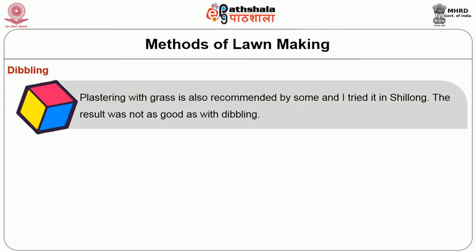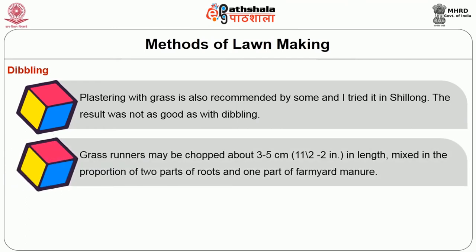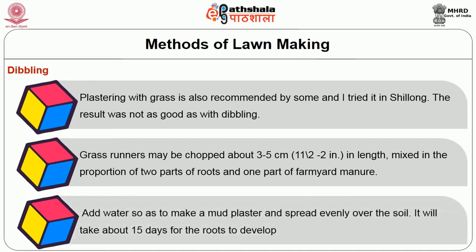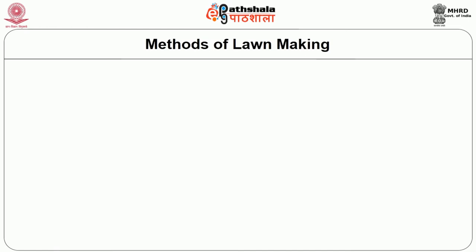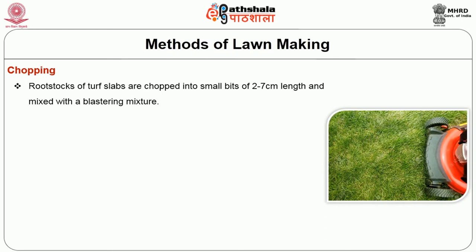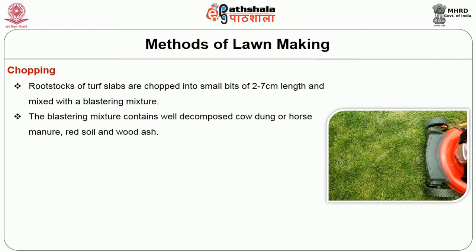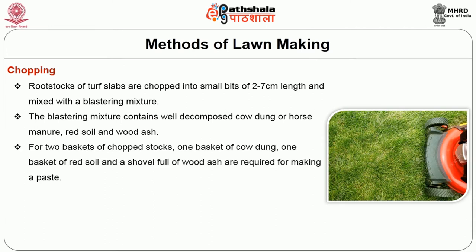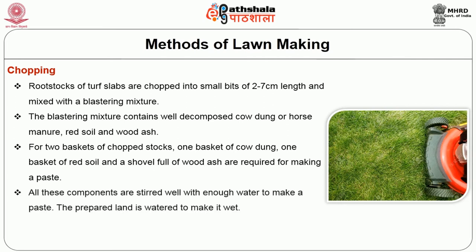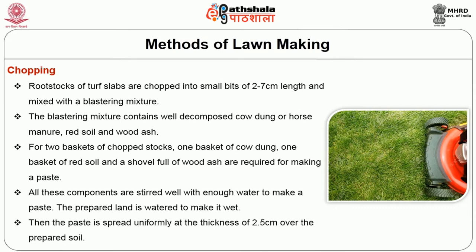The results are not as good as with dippling. Grass runners may be chopped about 3 to 5 cm in length, mixed in a proportion of 2 parts of roots and 1 part of farmyard manure. Add water so as to make a mud plaster and spread evenly over the soil. It will take about 15 days for roots to develop. The final method of lawn making is chopping. Root stalks of the turf are chopped into small pieces of 2 cm length and mixed with a blasting mixture. The blasting mixture contains well decomposed cowdung or horse manure, red soil and wood ash. For 2 baskets of chopped stalks, 1 basket of cowdung, 1 basket of red soil and a shovel full of wood ash are required for making a paste. All these components are stirred well with enough water to make a paste. The prepared land is watered to make it wet, then the paste is spread uniformly at a thickness of 2.5 cm over the prepared soil.